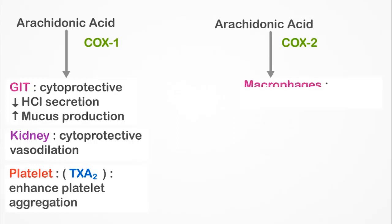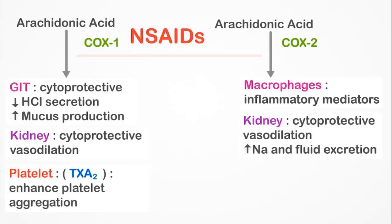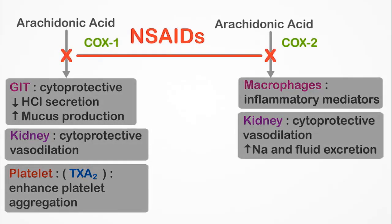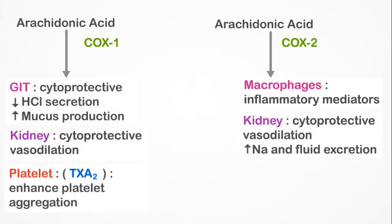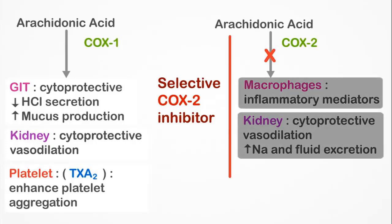On the other hand, the COX-2 enzyme mediates the production of various inflammatory mediators. Like COX-1, COX-2 mediates cytoprotective roles in the kidney — it enhances sodium and water secretion. Non-steroidal anti-inflammatory drugs, abbreviated as NSAIDs, non-selectively inhibit both COX-1 and COX-2 metabolic pathways. On the other hand, selective COX-2 inhibitors work more selectively on the COX-2 pathway, meaning that the physiological functions of the COX-1 pathway are largely spared.